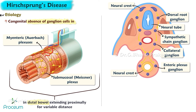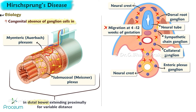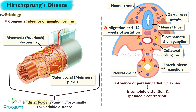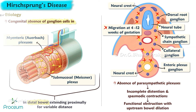It stems from the failure of ganglion cells to migrate cephalocaudally through the neural crest during weeks 4 through 12 of gestation. The absence of parasympathetic plexuses in the bowel causes incomplete distention and spasmodic contractions, leading to functional obstruction with upstream bowel dilation.